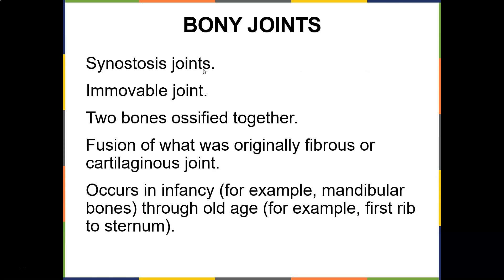Synostosis joints are immovable joints where two bones are ossified together — a fusion of what was originally a fibrous or cartilaginous joint. This usually occurs in infancy, for example the mandibular bones, or through old age, for example the first rib to the sternum. These are the bony joints, and they're immovable because two bones are fused together.